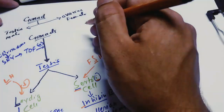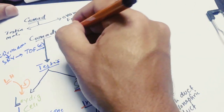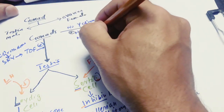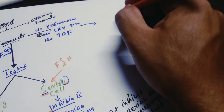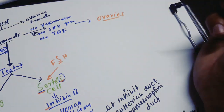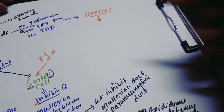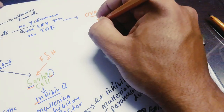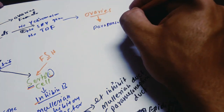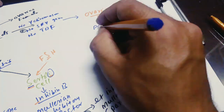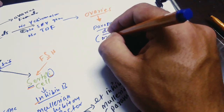If there is no Y chromosome, then there is no SRY gene and therefore no TDF (testes-determining factor). So in the absence of the Y chromosome, the gonads will form ovaries. In females, the paramesonephric duct, also called the Müllerian duct, is present.